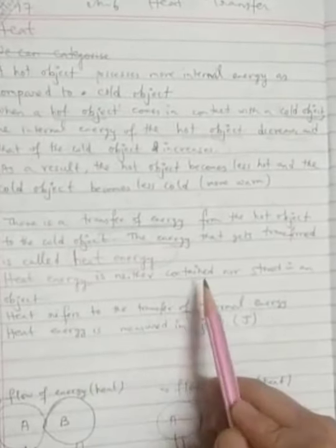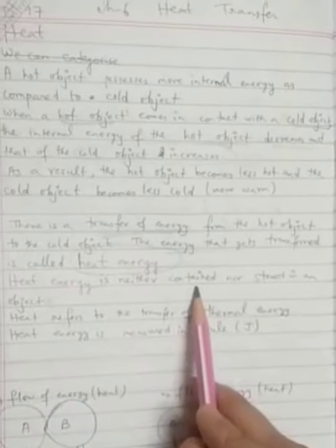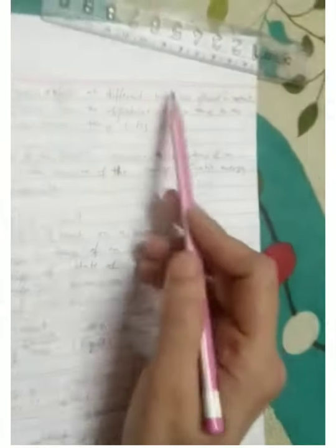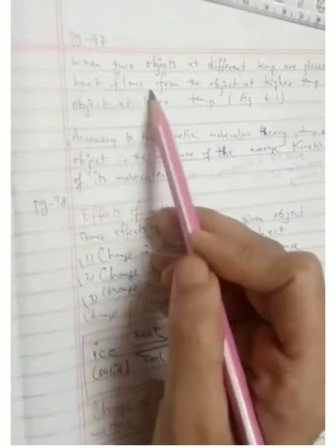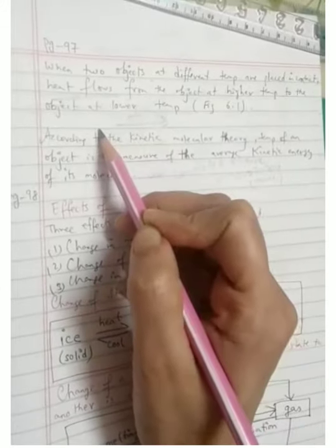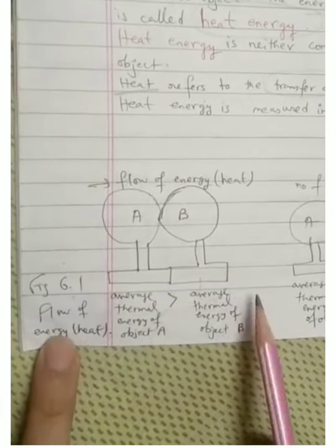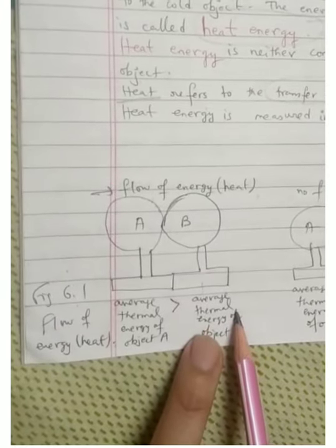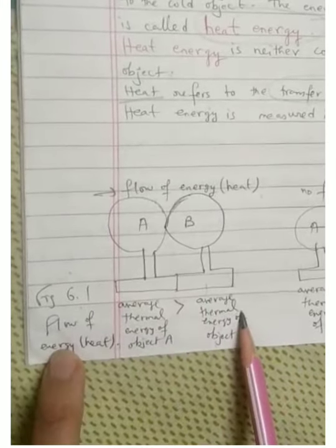The heat energy is neither contained nor stored in an object. Heat refers to the transfer of thermal energy. When two objects at different temperatures are placed in contact, heat will flow from the higher temperature to the lower temperature. You can refer to figure 6.1 — the average thermal energy of object A is greater than that of object B, so energy flows from A to B.